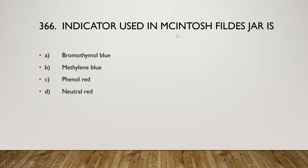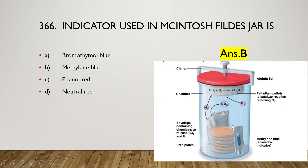Next: the indicator used in McIntosh and Fildes jar (anaerobic gas jar) is bromothymol blue, methylene blue, phenol red, or neutral red? The right answer is option B, methylene blue. In the anaerobic gas jar, plates are grown anaerobically, and the methylene blue indicator is normally pink. Under anaerobic conditions, it turns blue.